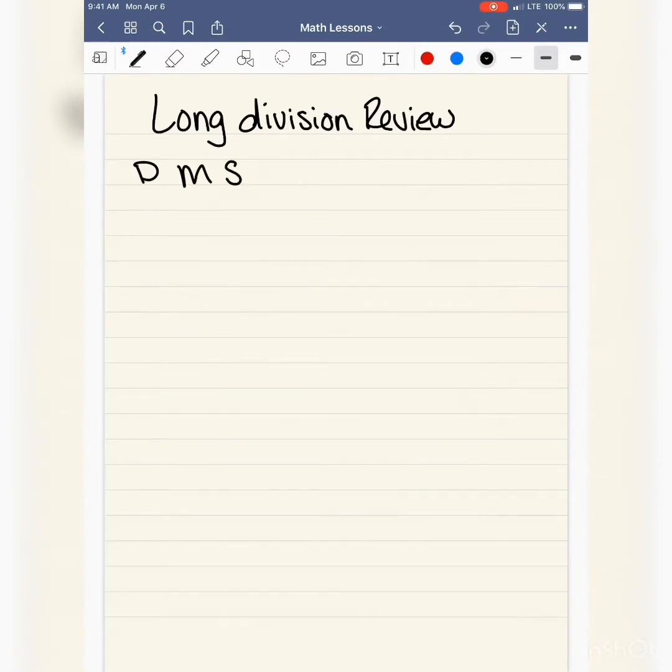So we need to remember that when we divide, we have steps that we follow. First we need to divide, then multiply, subtract, bring down, then we will either repeat the process or we'll have a remainder.